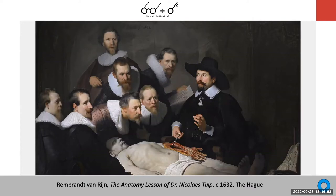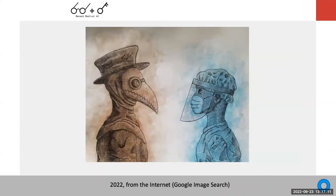About 100 years after the Black Death, during the Renaissance, people began to understand medicine by studying anatomy — understanding the structure of the human body — which set up a very important foundation for modern medicine. One key difference between traditional and modern medicine is the understanding of disease spread: 600 years ago, doctors believed the scent of flowers and wearing a mask could stop virus spread.